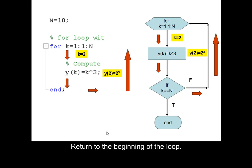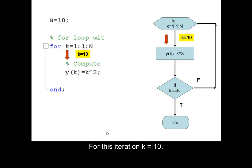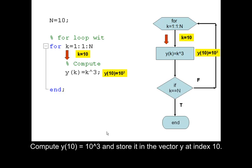Return to the beginning of the loop. The loop continues its iterations until it satisfies the condition if k is equal to n. For the final iteration, k is equal to 10. Compute y equals 10 cubed and store it in the vector y at index 10.